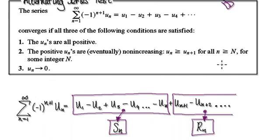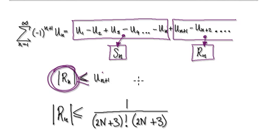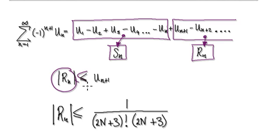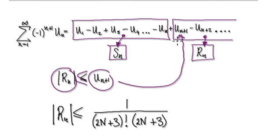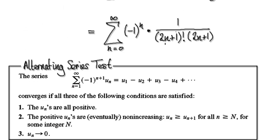When we have an alternating series that converges, we can make use of this remainder. The remainder will always be less than or equal to not u_n, but the next one — the next term. So going back to here: the remainder is always less than or equal to the next term.